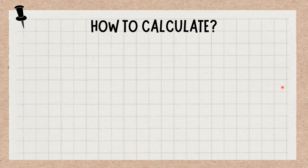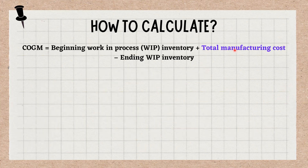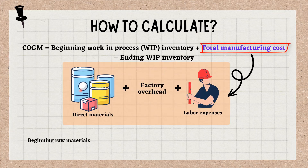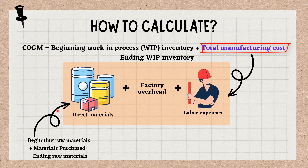The total manufacturing portion of this formula refers to the direct materials, direct labor and manufacturing overhead that were paid for during a certain period for the production of goods. You can calculate the direct materials by adding the beginning raw materials to the purchases made and subtracting that total from the ending raw materials. Raw materials are inventory waiting to be used in the production of goods.